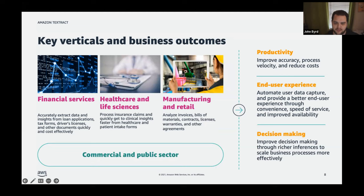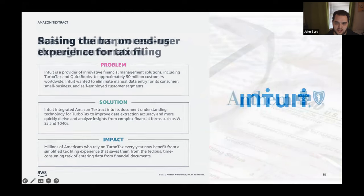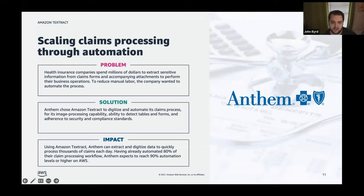A great example is Anthem, who used Textract to digitize and automate their claims process — automating away millions spent on extracting sensitive data — all while maintaining compliance and regulatory requirements. The biggest value was automating 80% of their entire claims processing workflow, with a stretch goal of 90% in future iterations.